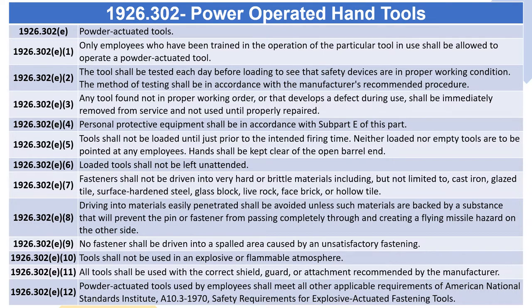1926.302(e)(3): Any tool found not in proper working order or that develops a defect during use shall be immediately removed from service and not used until properly repaired. 1926.302(e)(4): Personal protective equipment shall be in accordance with subpart E of this part. 1926.302(e)(5): Tools shall not be loaded until just prior to the intended firing time. Neither loaded nor empty tools are to be pointed at any employees. Hands shall be kept clear of the open barrel end.